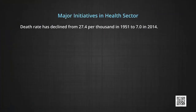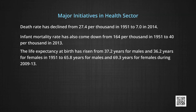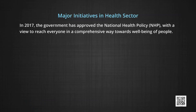There has been significant improvement in the health sector. Death rate has declined from 27.4 per thousand in 1951 to 7.0 in 2014. Infant mortality rate has also come down from 164 per thousand in 1951 to 40 per thousand in 2013. Life expectancy at birth has risen from 37.2 years for males and 36.2 years for females in 1951 to 65.8 years for males and 69.3 years for females during 2009–2013. Still, health care facilities from public and private sectors together remain inadequate, and services are unaffordable for a large section of the population. In 2017, the government approved the National Health Policy to reach everyone in a comprehensive way towards the well-being of people.